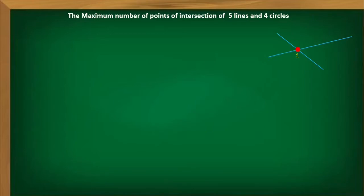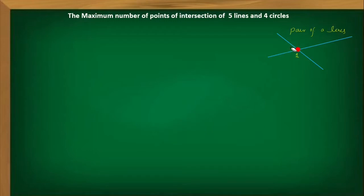Whenever you have a pair of lines, you will get one point of intersection. So the question becomes: how many points of intersection can be formed with the help of lines? That means we need to find how many pairs of lines we have.